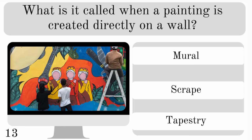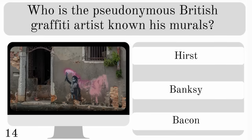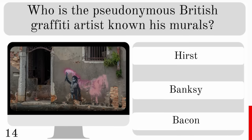What is it called when a painting is created directly on a wall? Is it a mural, scrape or tapestry? The answer is mural. So who is the pseudo-anonymous British graffiti artist known for his murals? Is it Hearst, Banksy or Bacon? The answer is Banksy.